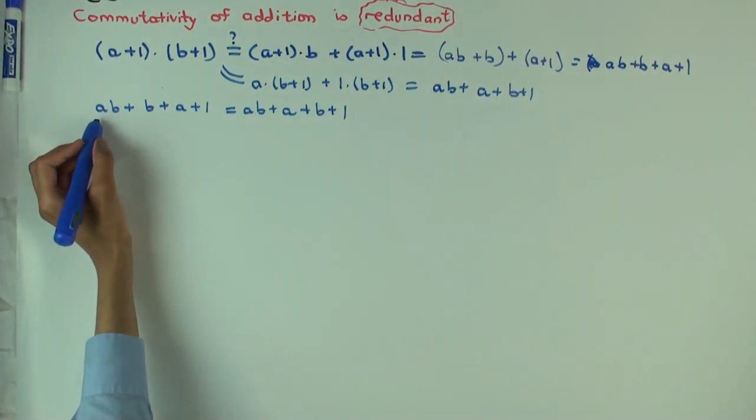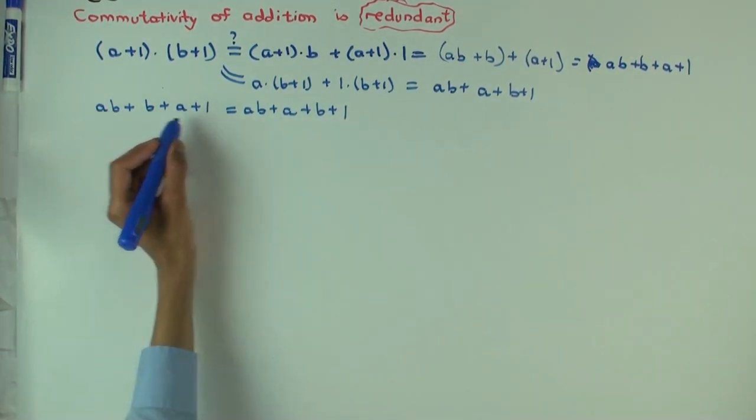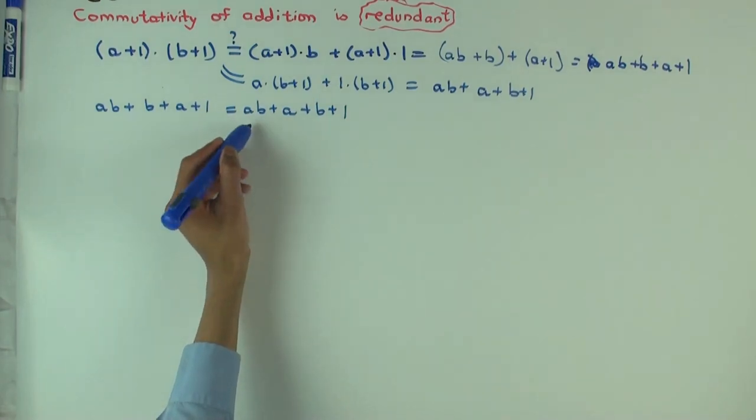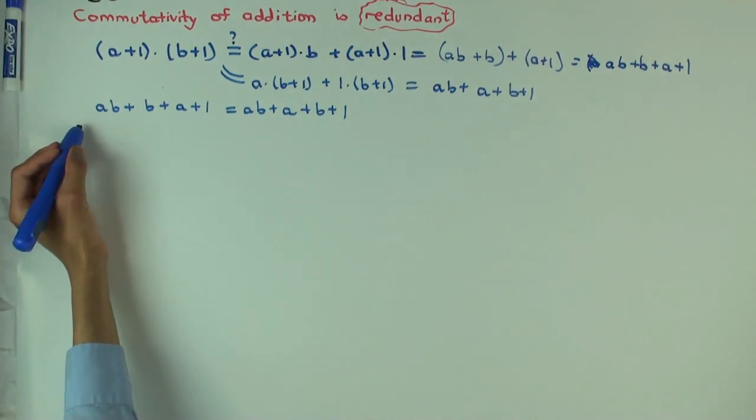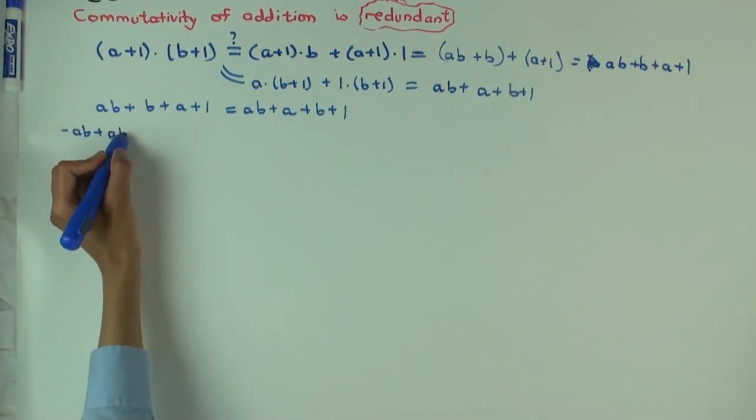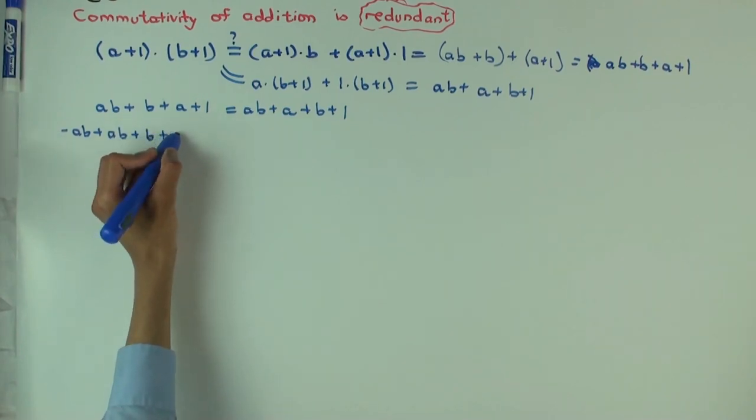what we get is we get AB plus B plus A plus 1 is AB plus A plus B plus 1. Okay, now I can cancel the AB on the left on both sides. Why can I cancel? How do I execute cancellation? Oh, but I say we must. Yeah, I can add minus AB to both sides on the left and cancel, right? Let me just do that explicitly.